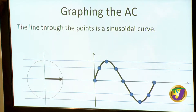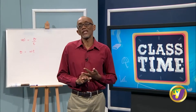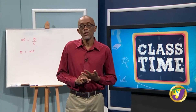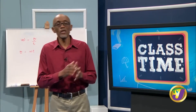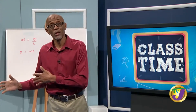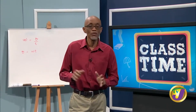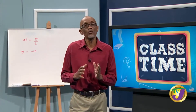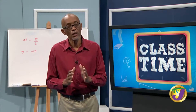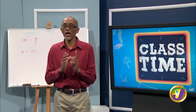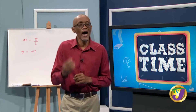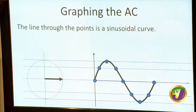We are now at the point where we can represent an alternating current both by an equation and graphically. These two representations must be related — if we have a graph, there is some equation that models it. Let's look at the relationship between the equation we derived for the alternating current and this graphical sinusoidal relationship.